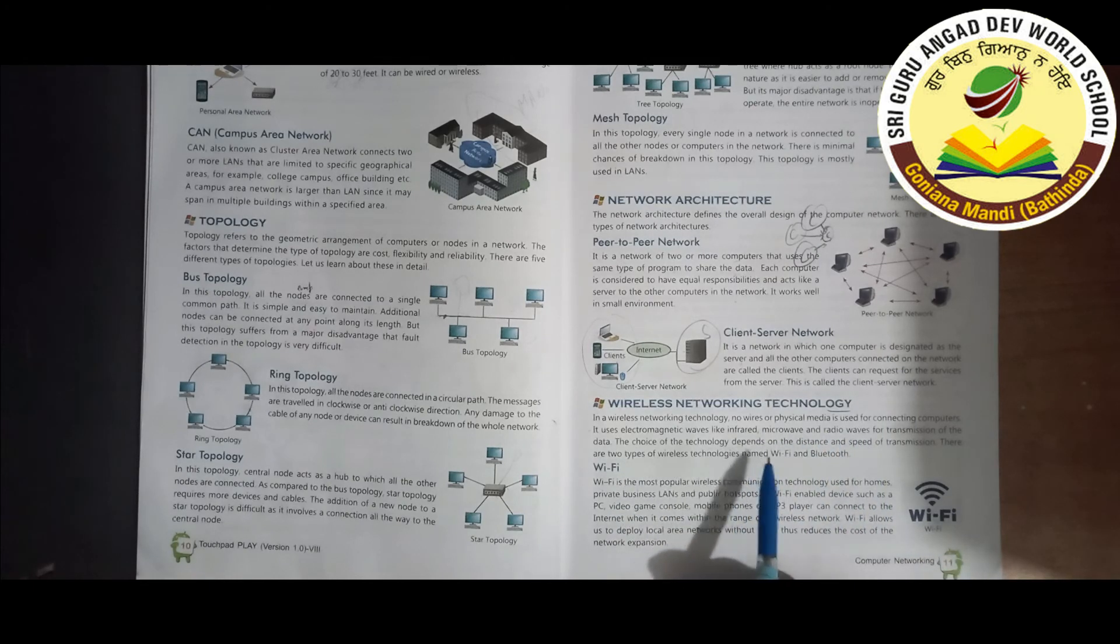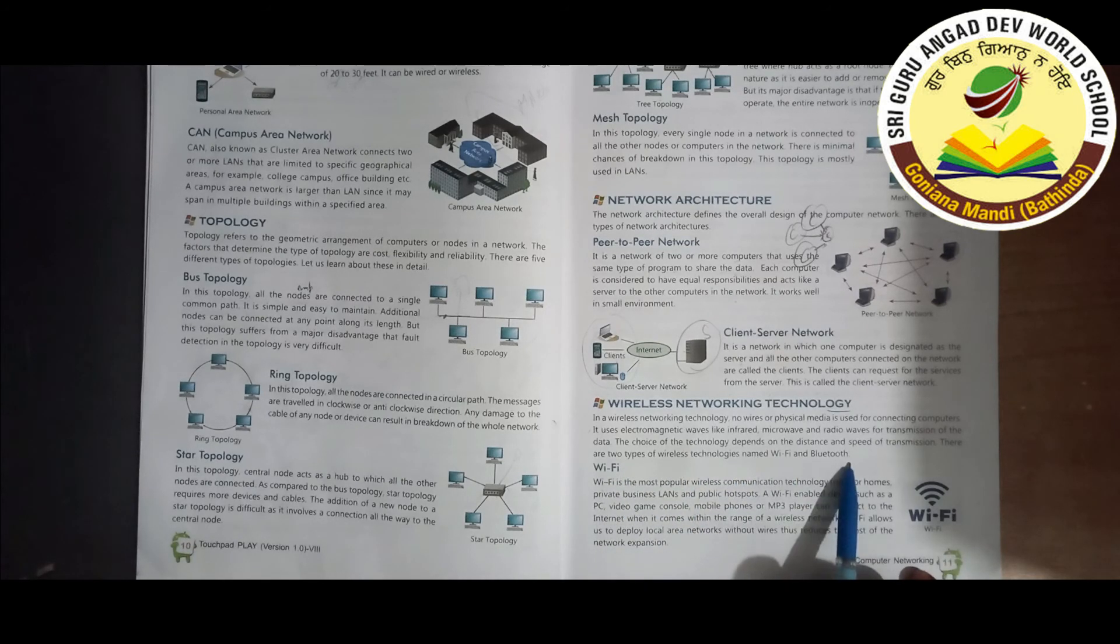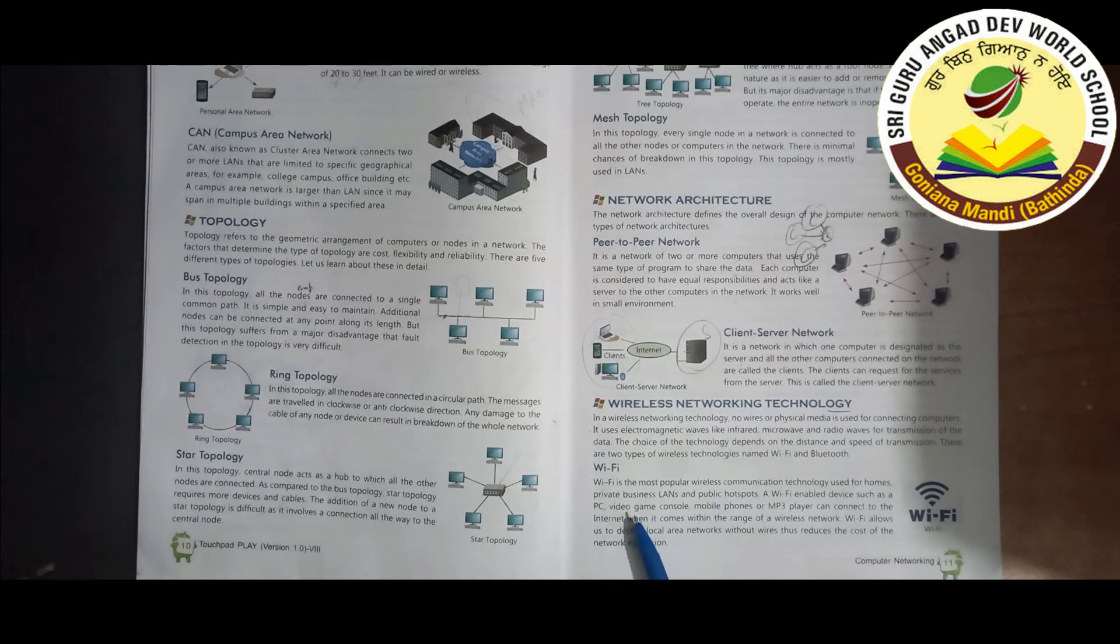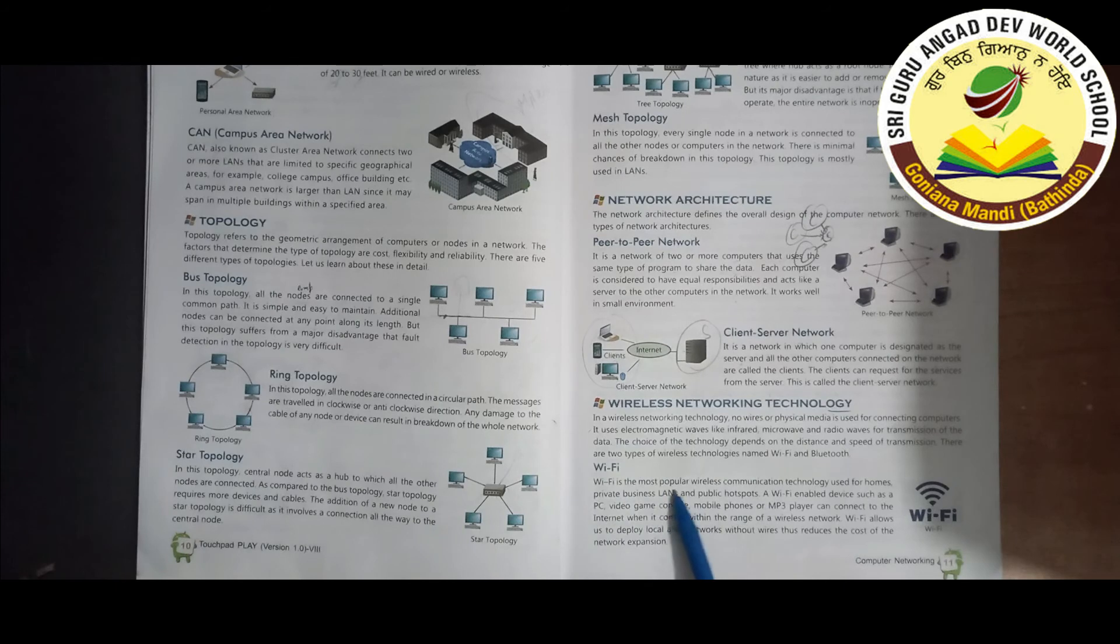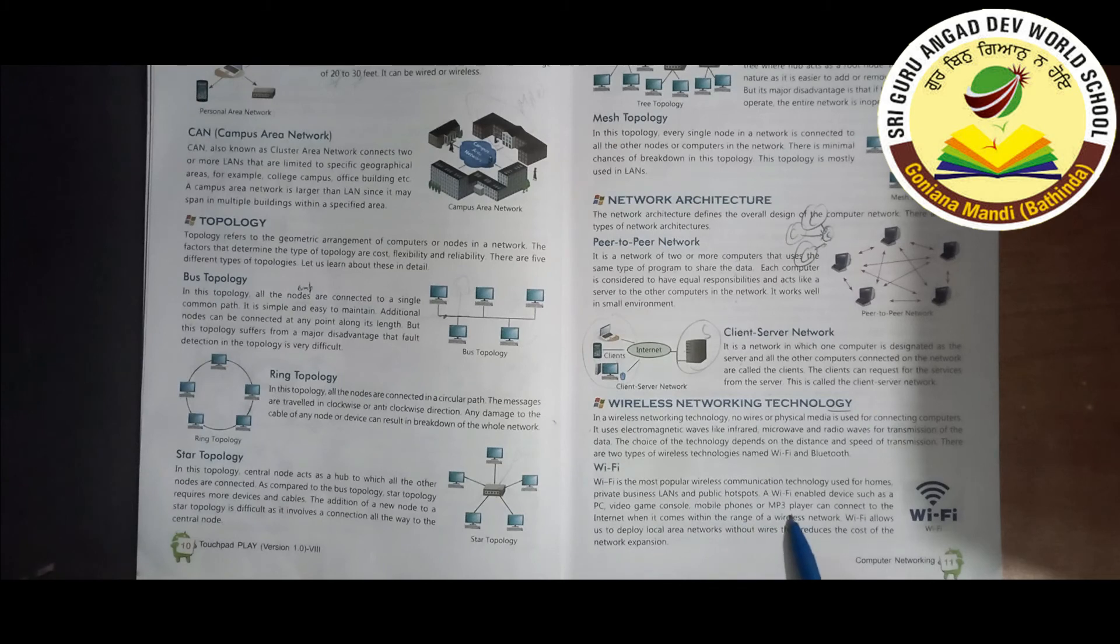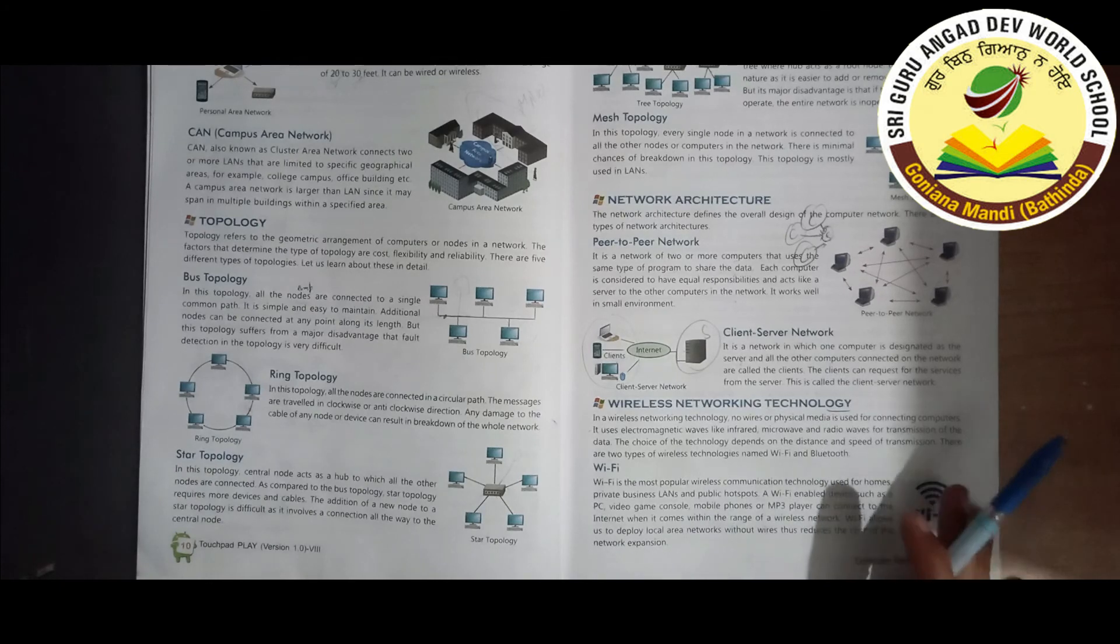The choice of this technology depends on the distance and speed of transmission. There are two types of wireless technology named Wi-Fi and Bluetooth. Wi-Fi is very famous and useful for high-speed data. Wi-Fi is the most popular wireless communication technology used for homes, private business LANs, and public hotspots. A Wi-Fi enabled device such as PC, video game console, mobile phone, or MP3 player can connect to the Internet when it comes within the range of a wireless network. Wi-Fi allows us to deploy local area networks without wires, thus reduces the cost of network expansion.